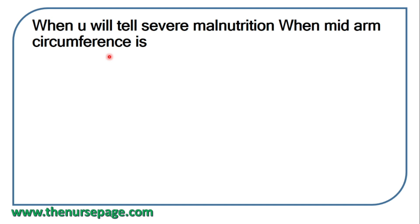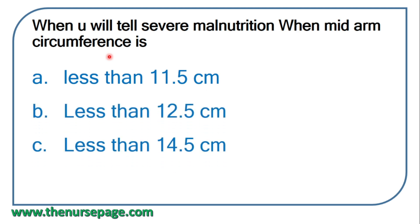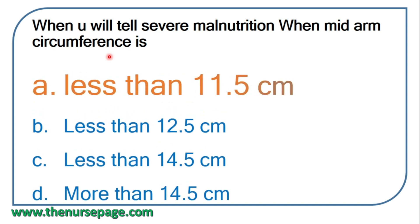Next question: when will you diagnose severe malnutrition based on mid-arm circumference? Options include less than 11.5 cm, less than 12.5 cm, less than 14.5 cm, more than 14.5 cm. Correct answer: less than 11.5 cm indicates severe malnutrition.